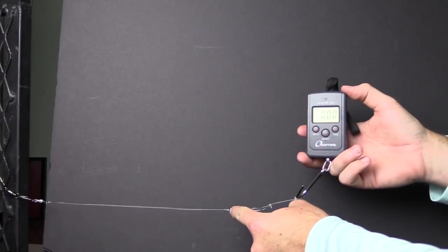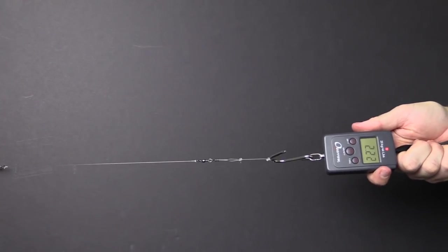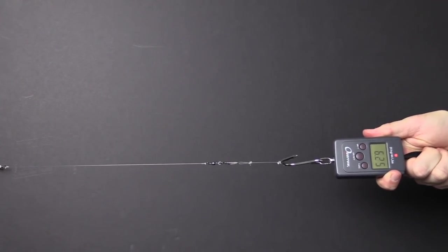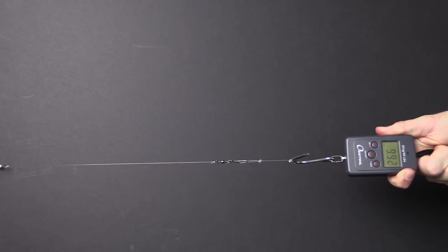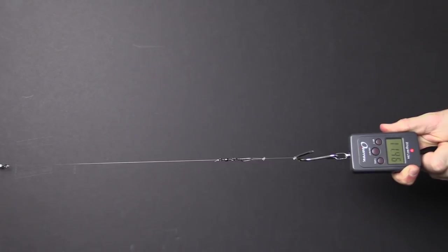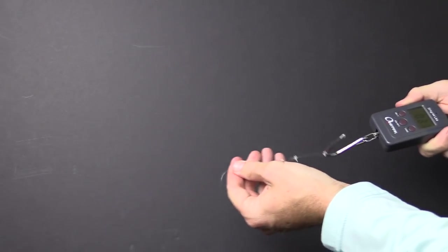We have the clinch knot on this side, uni knot over here. We're zeroed out, let's see what happens. We're now at 6, 7, 8, 9, 10, 11, 12, 13 - wow, that was around 14 pounds, and the uni knot failed.